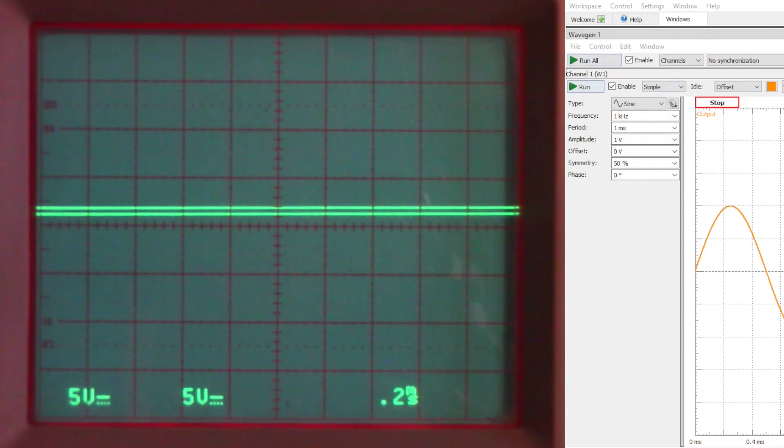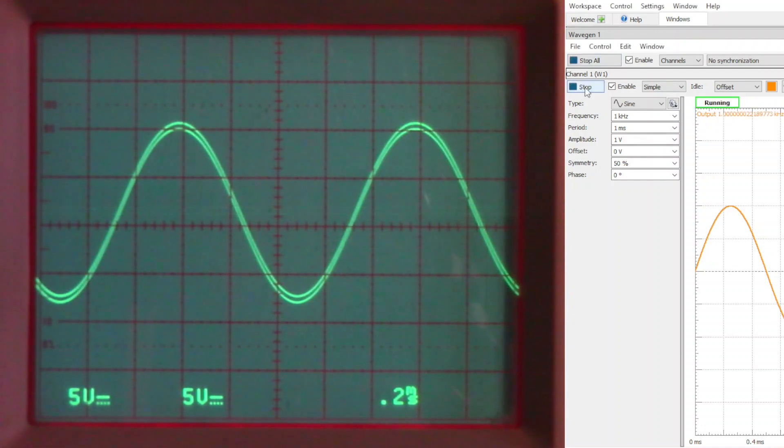We can turn on our function generator and we can see that the output very closely follows the input. In fact if I adjust channel 2 ever so slightly they should be right on top of each other which implies that we have a faithful reproduction of the signal.